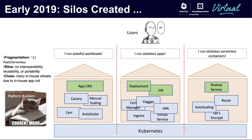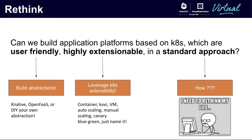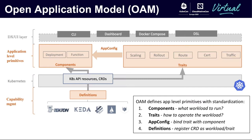So we stopped and began to rethink what we had done over the past year. We were trying to build application-level platforms for our users, making sure they are user-friendly by adopting ecosystem tools and defining our own abstractions. We also wanted them to be extensible — supporting different kinds of workloads and operational capabilities. But all of these platforms became silos. This raised a new challenge: can we build them in a standard approach? These re-thinkings finally led us to a standard to build application platforms, named the Open Application Model, OAM, which we open-sourced in collaboration with Microsoft.